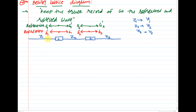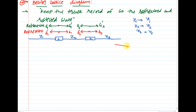At the top of the diagram we write the reflection and refraction coefficients for waves approaching the junction from both the right and left sides. These coefficients are functions of the surge impedance of the transmission line.